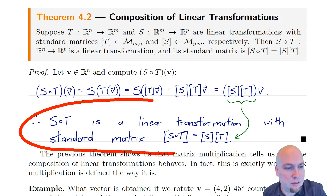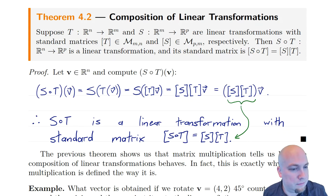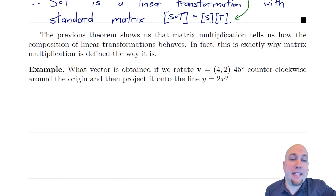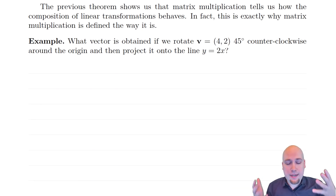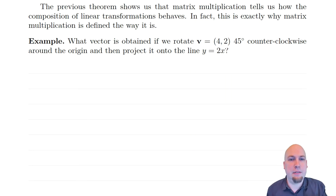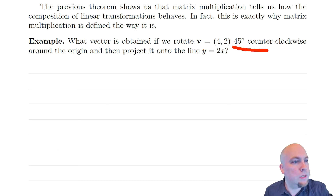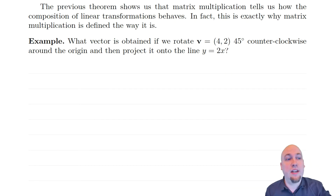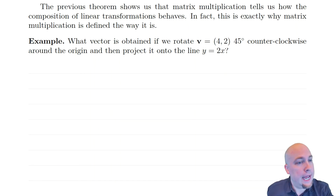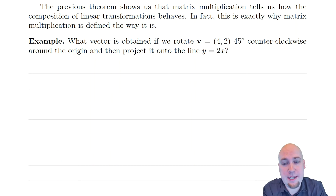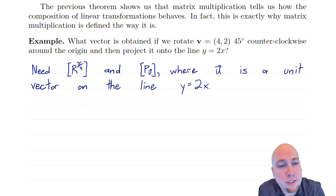This is really nice for computations, because now if you ever have a sequential application of linear transformations, you know that the way you can compute what happens is just via matrix multiplication. So let's do a couple examples. What vector is obtained if we start off with the vector (4, 2), rotate it counterclockwise around the origin by 45 degrees, and then project that resulting vector onto the line y equals 2x? We do two things to the input vector — we rotate it and we project it — so we're going to need two standard matrices: the standard matrix of the rotation and the standard matrix of the projection.